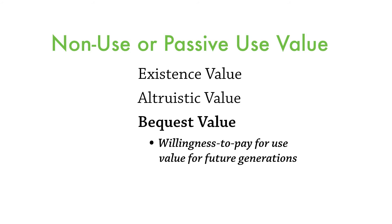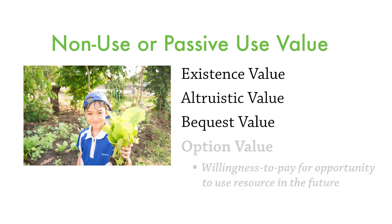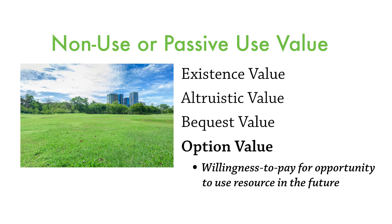Bequest values involve multi-generational thinking — you might want to forego some damage to an ecosystem not because it will impact you or your generation, but because of future generations to come. And then there's option value, which some argue is a form of use value: you're willing to preserve the opportunity to utilize or interact with a resource in the future, although you don't have a plan to utilize it now. These are the challenges that we face.